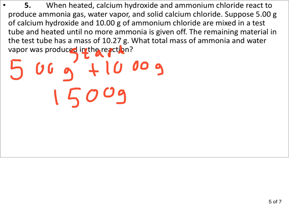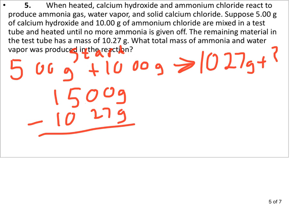And then it's going to produce, it says, what was left was 10.27 grams plus some other stuff, which is the mass of the ammonia and the water vapor that went off up into the air. So to figure out that question, we're just going to take the 15.00 minus 10.27 grams. And that should give us 4.73 grams.